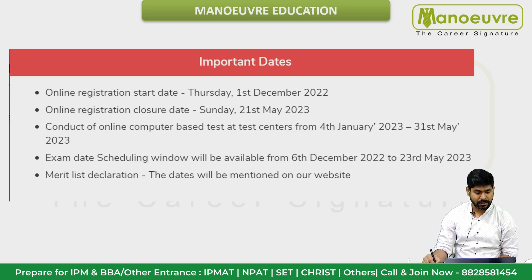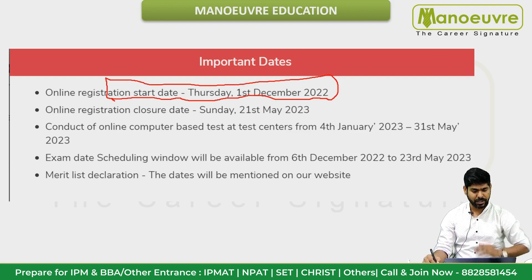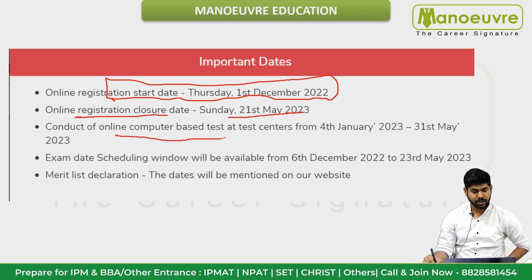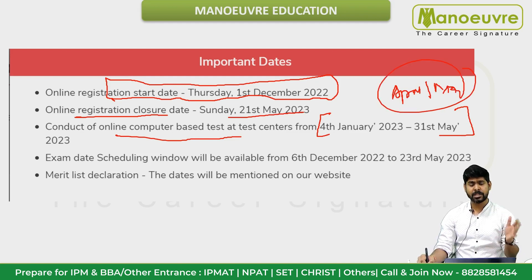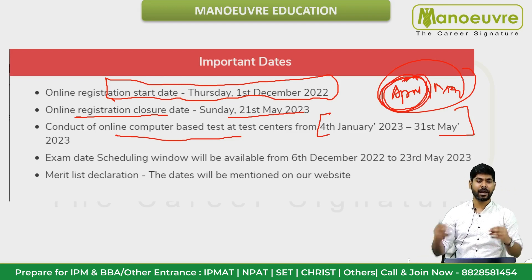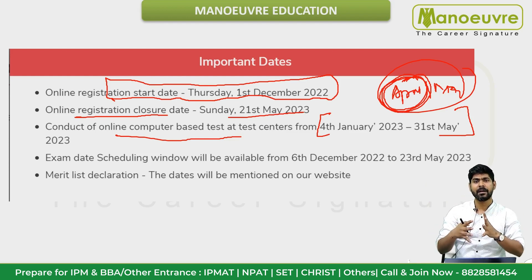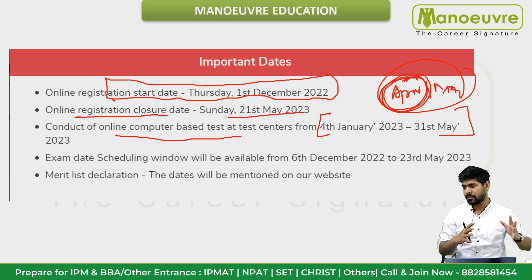Online registration has started. If you haven't filled the form, note that May 21st is the registration deadline. The exam runs from 4th January to 31st May. My advice: since your 12th board is finished, give at least 2 attempts — one in April and one in May — to maximize your score. Complete your crash course before the exam date so you have time to practice.